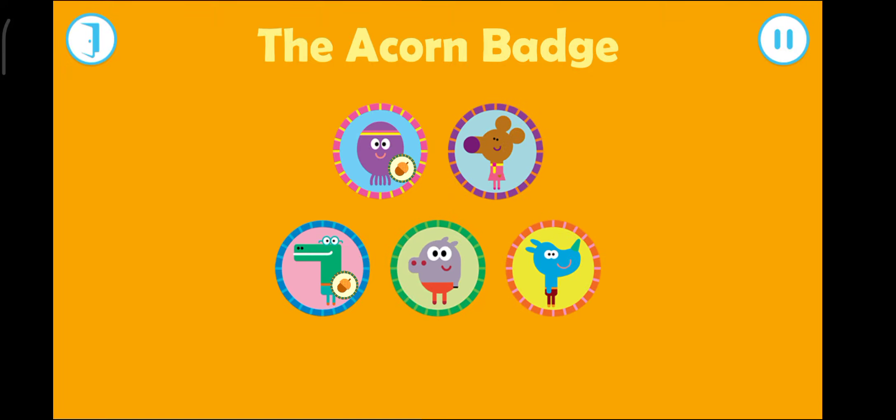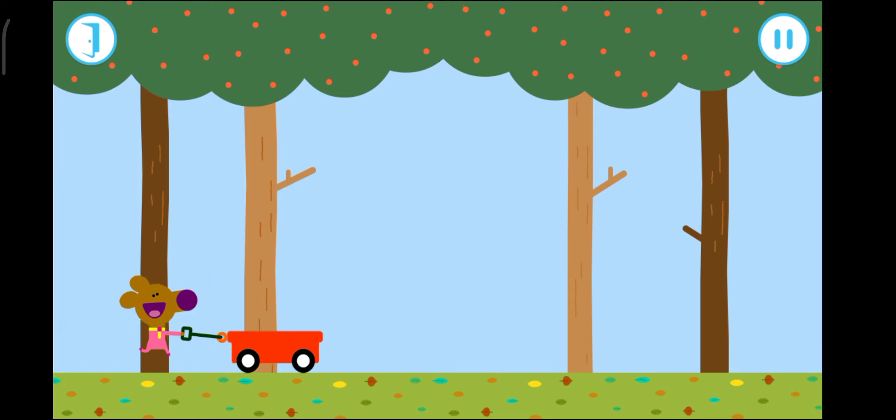Who wants to get their badge? Norrie, drag the cart from side to side to collect the falling acorns. Can you fill the cart all the way to the top?